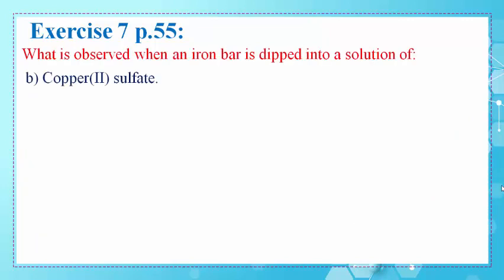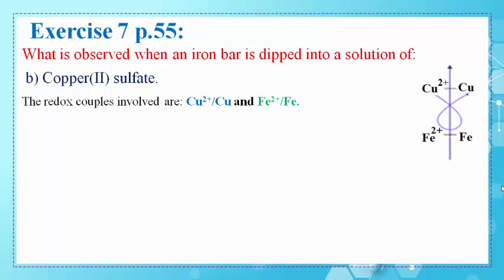In part B: what is observed when an iron bar is dipped into a solution of copper(II) sulfate? The redox couples involved are Cu2+/Cu, due to the copper(II) sulfate solution, and Fe2+/Fe, due to the iron bar. We classify these two redox couples on an axis. The species present are Fe metal and Cu2+ ions in the copper(II) sulfate solution.